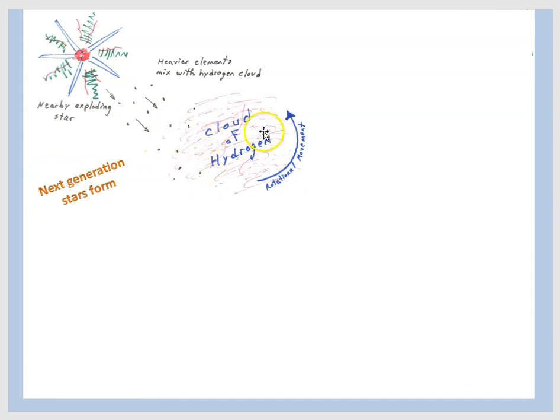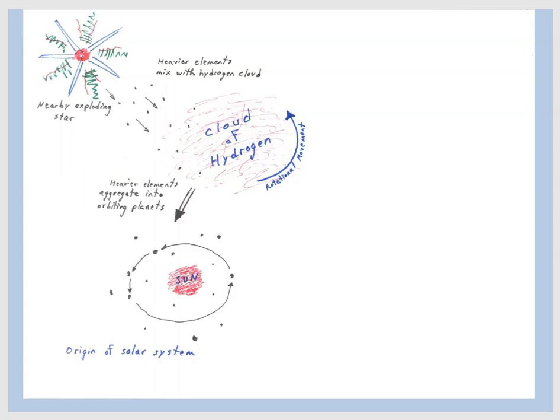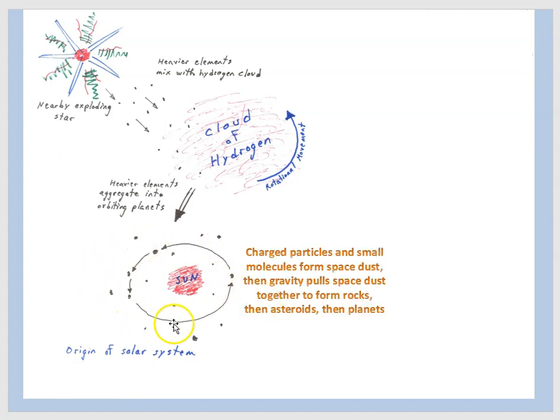So now we have the potential to make the second generation of stars, but we've got a mix of heavy elements here. And that's going to allow for the formation of planets around these next generation stars. So the star will be formed from the hydrogen and helium gas, but the heavy elements will tend to aggregate into small particles and then little rocks and then bigger rocks and ultimately planets. So we could describe it this way. Charged particles and small molecules form space dust. And then gravity pulls the space dust together to form rocks, asteroids, and then planets.